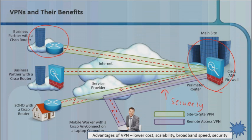Some of the advantages, of course, are lower costs. If you're already paying for an outside interface, an internet connection to a service provider, why have a separate dedicated WAN interface when you can leverage your Metro eConnection for something like a VPN?